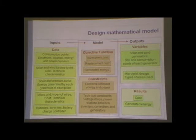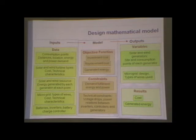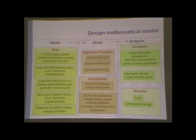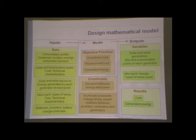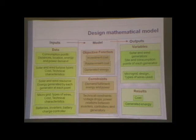The model needs input data. In this case, the input data is the locations of the households and the demand of energy and power. We also need to know the available types of solar and wind turbines, and the same information for batteries, inverters, controllers, wires, and electric meters. And also we need a map of the solar and wind resources. Given this information, the model gives us a design solution by setting values to the decision variables.